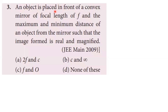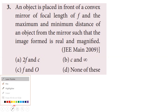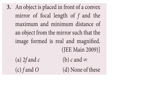Third option: an object is placed in front of a convex mirror of focal length F, and the maximum and minimum distance of the object from the mirror such that the image formed is real and magnified. A convex mirror can only form a virtual image, so no position of the object gives a real and magnified image — the answer is none of these.